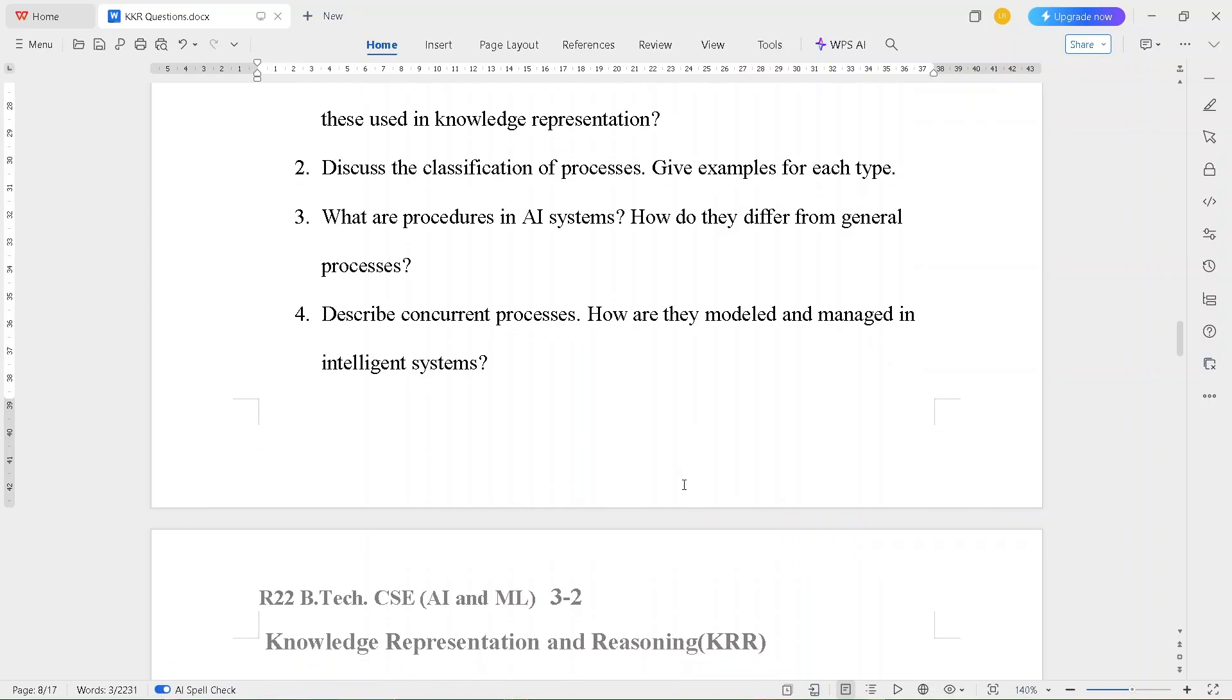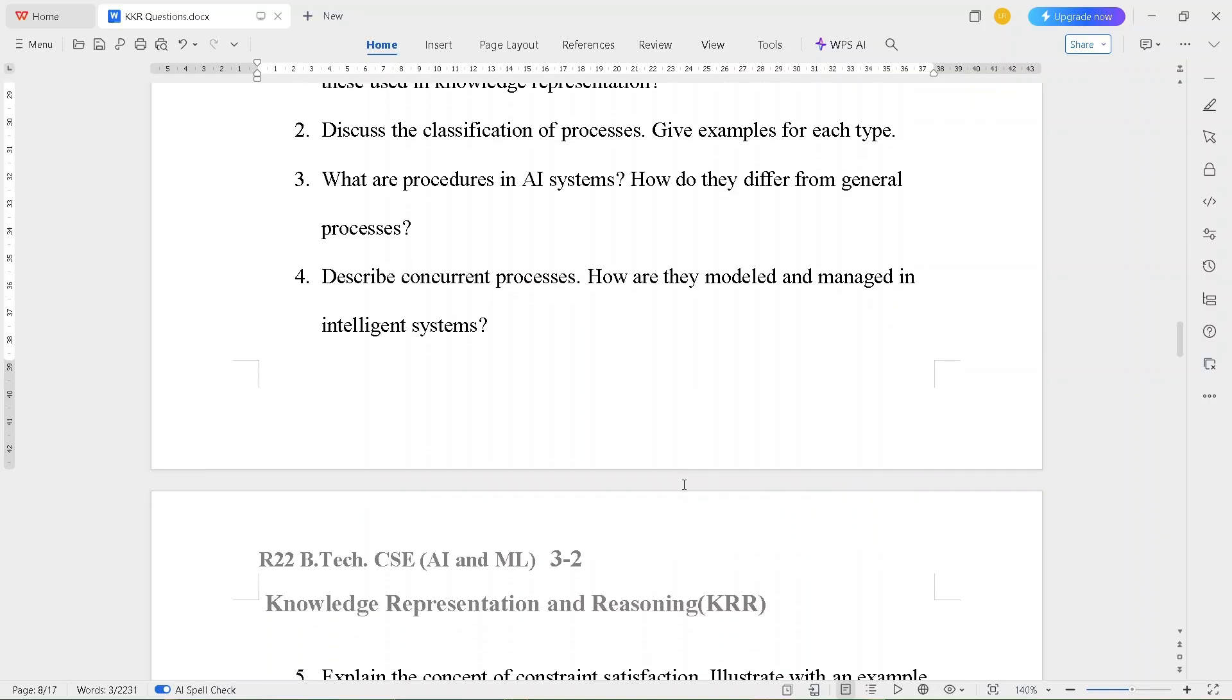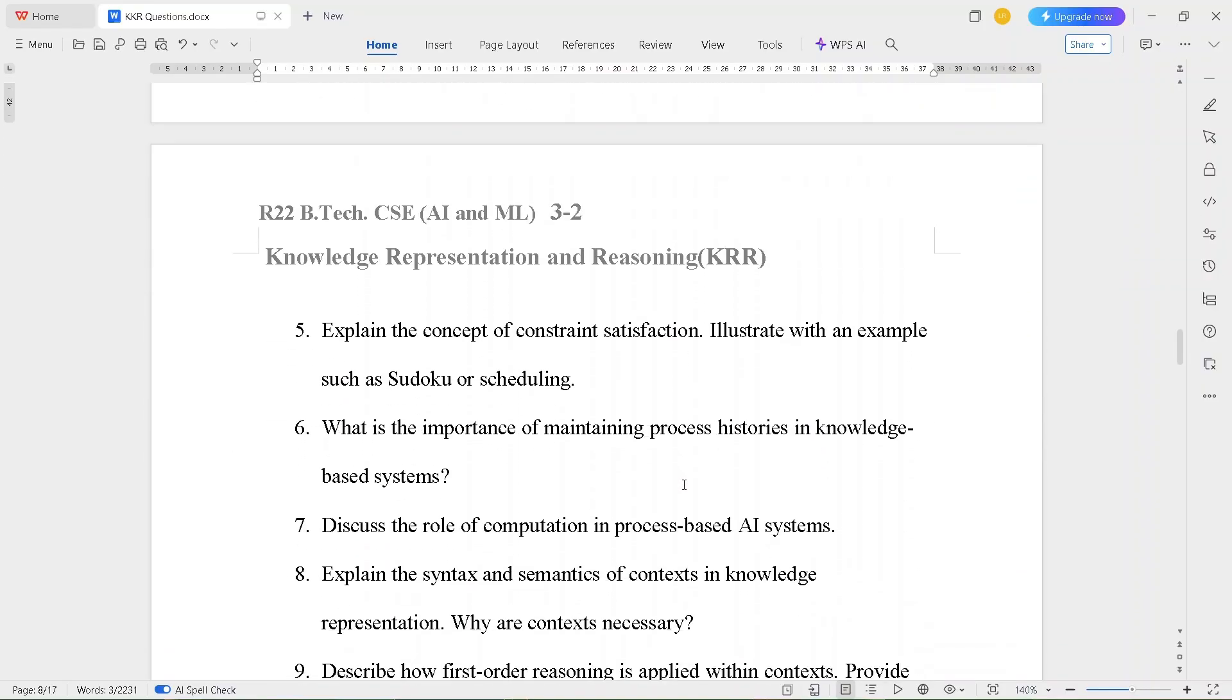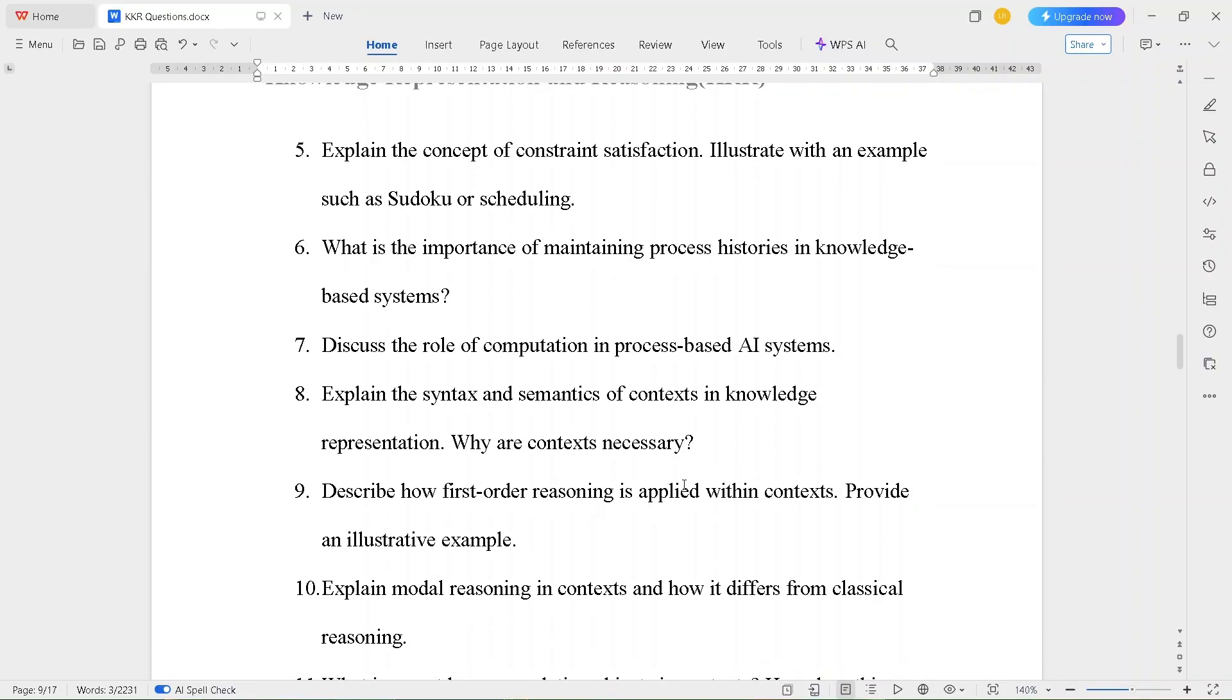Describe concurrent process. How are they modeled and managed in intelligent systems? Fifth question is, explain the concept of constraint satisfaction. Illustrate with an example such as Sudoku or scheduling. What is the importance of maintaining process histories in knowledge-based systems?